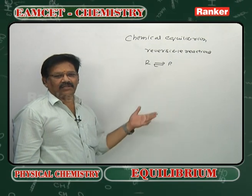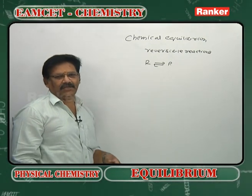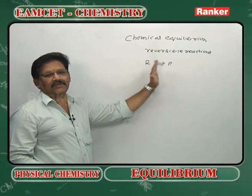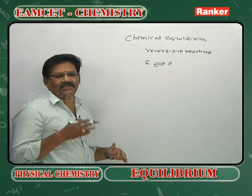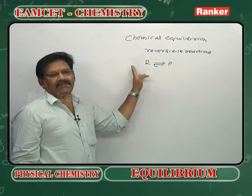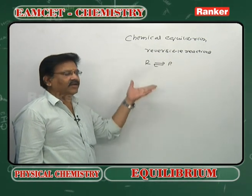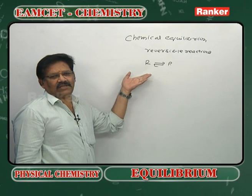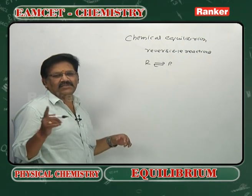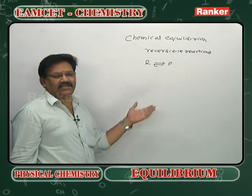When chemical equilibrium is established, we observe no further change in the concentrations of the reactants or the products with time, as long as external conditions are maintained constant. The attainment of chemical equilibrium can be recognized by the constancy in observable properties like pressure and color intensity.